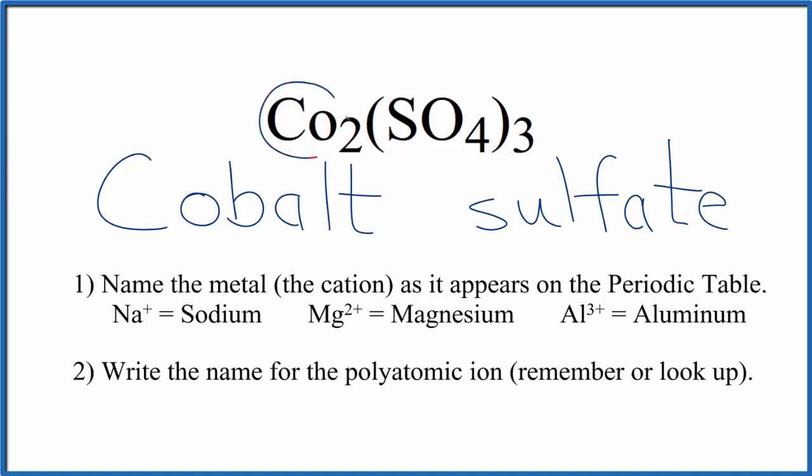But cobalt is a transition metal, so we need to write the charge in the name. We know that the sulfate ion is 2-, and we have three of them. So 3 times 2- equals 6-. 2 times something will give us 6+. We want these two numbers to add up to 0, giving us a net charge of 0.